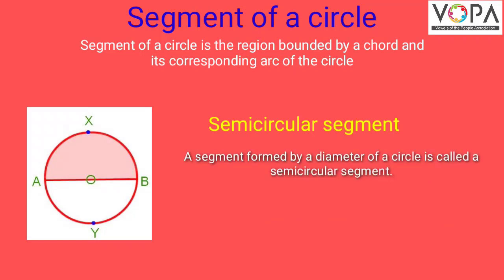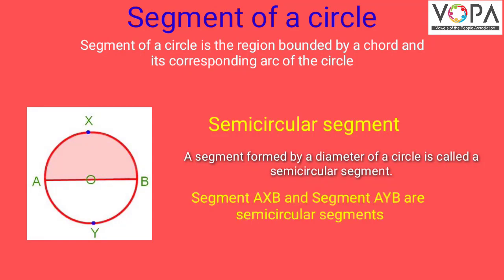Semicircular segment: a segment formed by a diameter of a circle is called a semi-circular segment. Here, segment AXB and segment AYB are semi-circular segments.